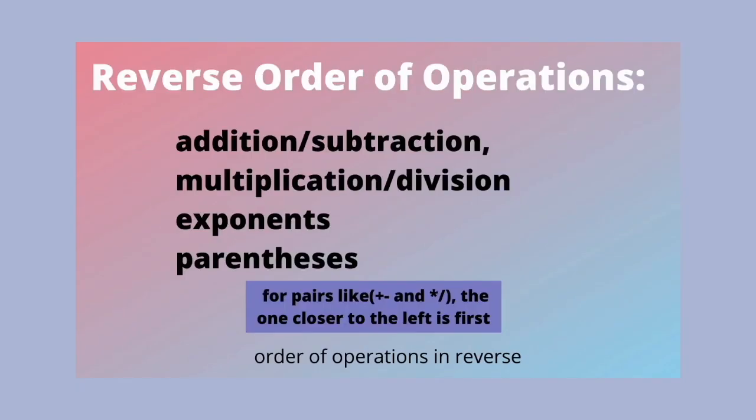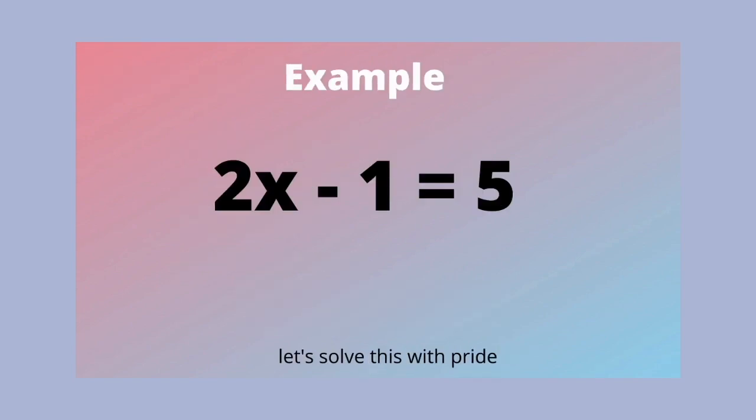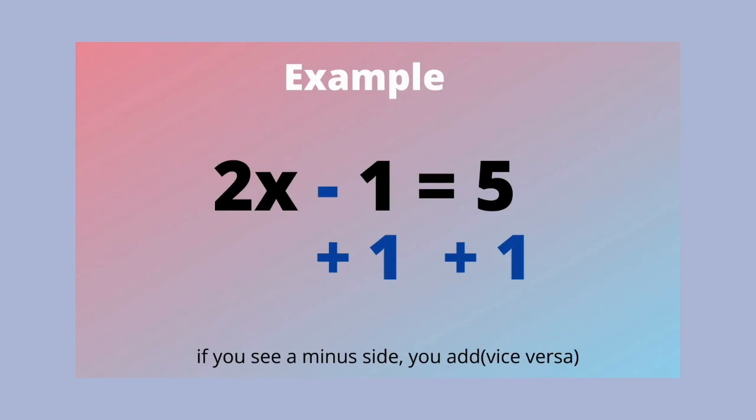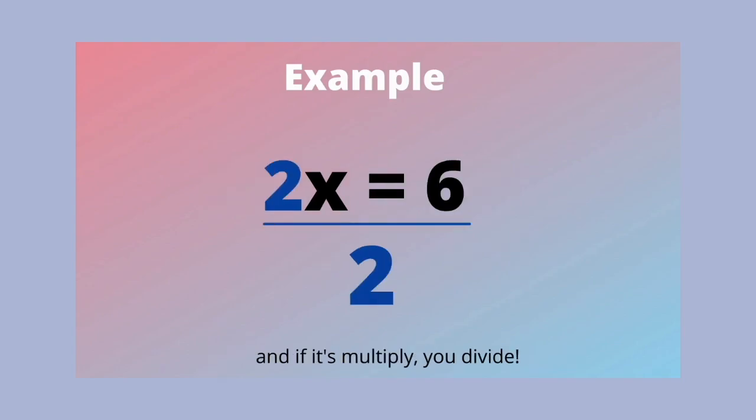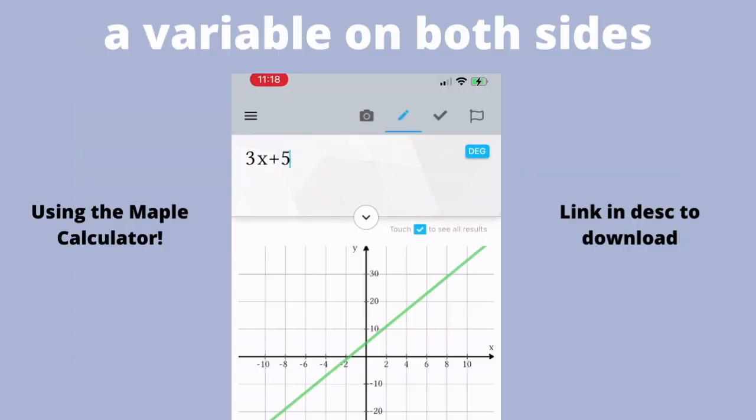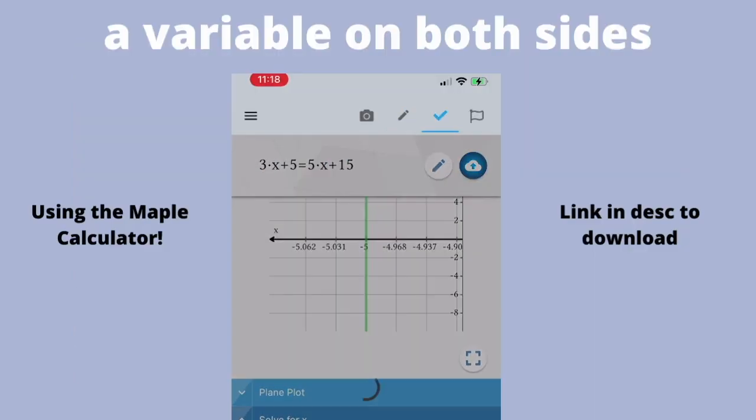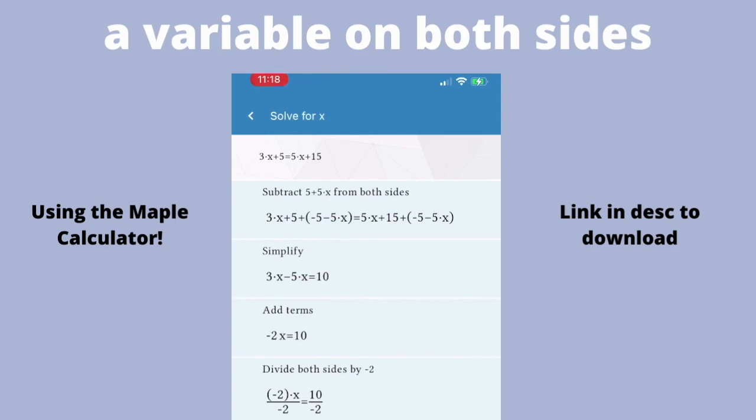Use order of operations in reverse. If you see a minus sign you add, and if it's multiply you divide. Sometimes it's possible to have x on both sides. In this case, treat x as something that also has to be balanced just like the rest of the equation.